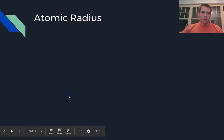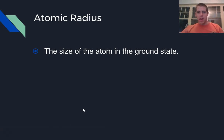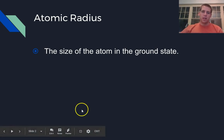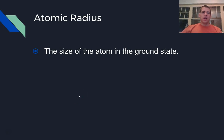Let's start with some definitions. The atomic radius is, kind of as the name suggests, the size of the atom — the distance from the inside of the atom to the outside rings. We're going to assume that we're always in the ground state for this; we don't need to worry about the radius changing when we excite electrons out to outside orbitals.